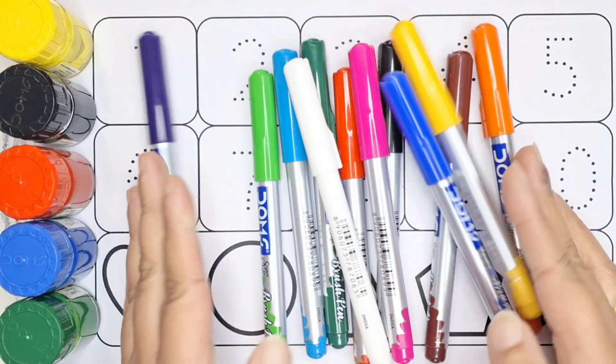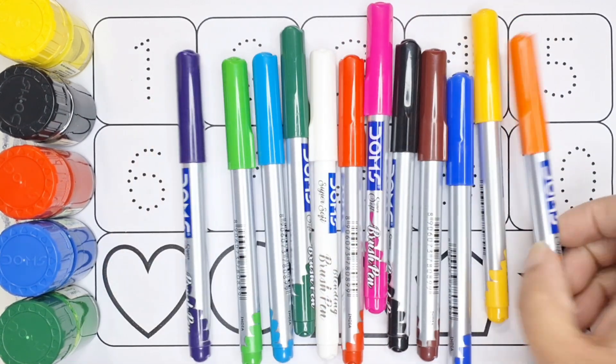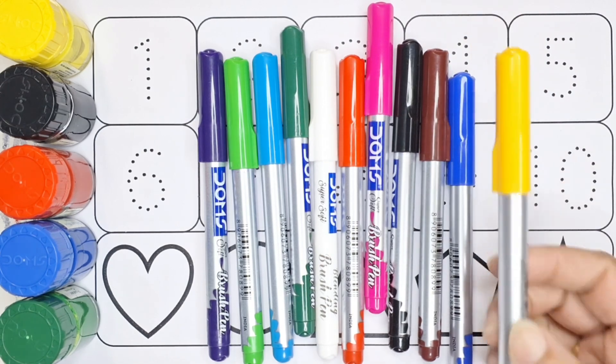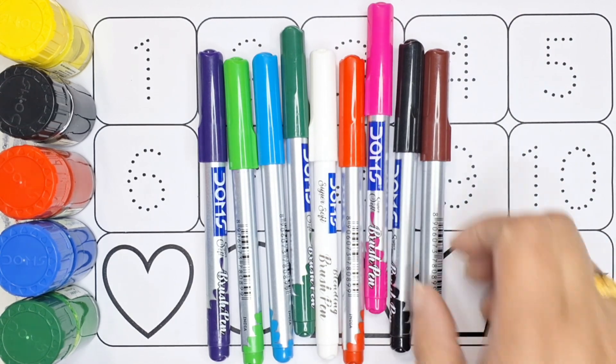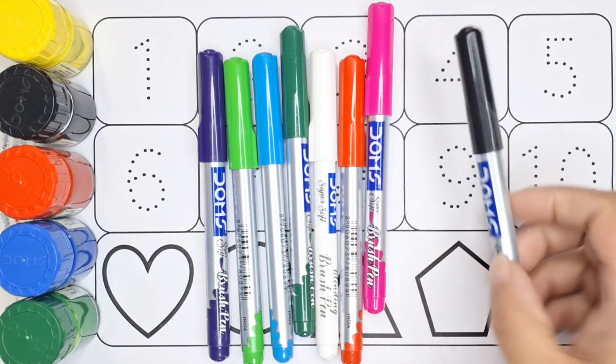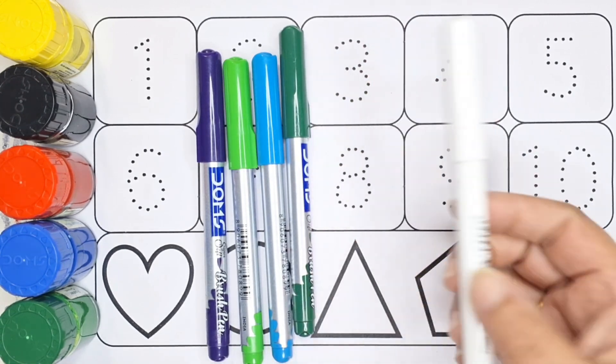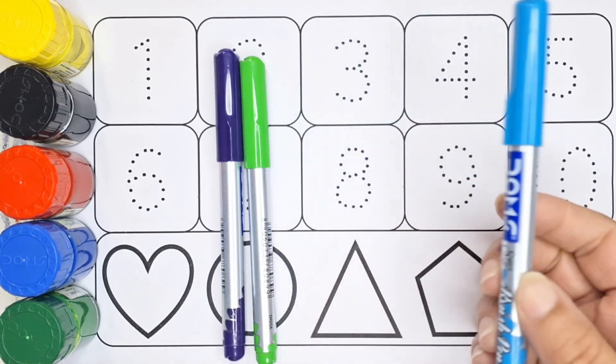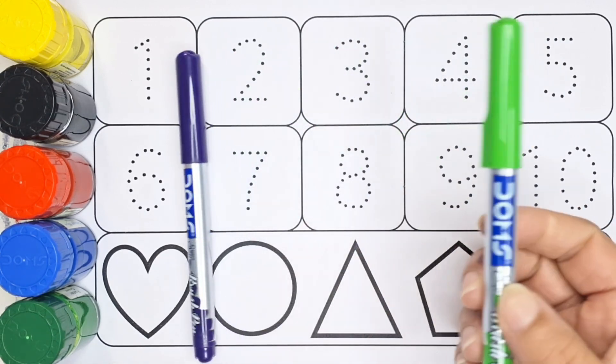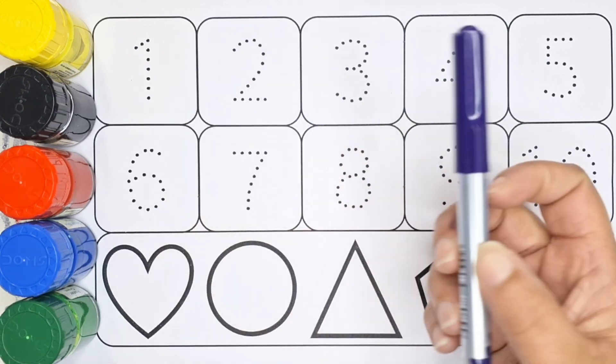Let's learn some of the colors. Orange color, yellow color, blue color, brown color, black color, pink color, red color, white color, dark green color, sky blue color, green color, and purple color.